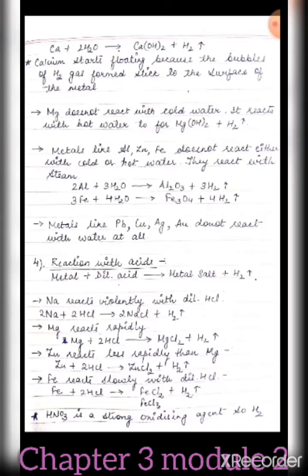Calcium starts floating because bubbles of hydrogen gas form and stick to its surface. Since hydrogen is lighter than water, the metal floats upward. Magnesium does not react with cold water but reacts with hot water to form magnesium hydroxide and H2 gas.